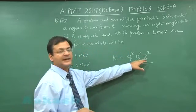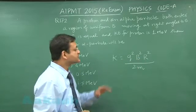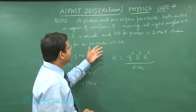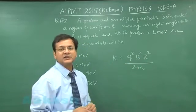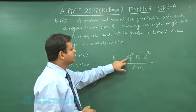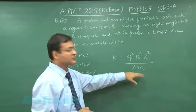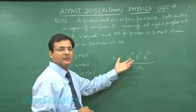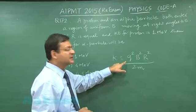They have given to you in the question that the radius is same and magnetic field is same. Kinetic energy of proton and alpha particle is to be compared. If you see proton, then q is equal to 1 and mass is 1, so k is proportional to 1.